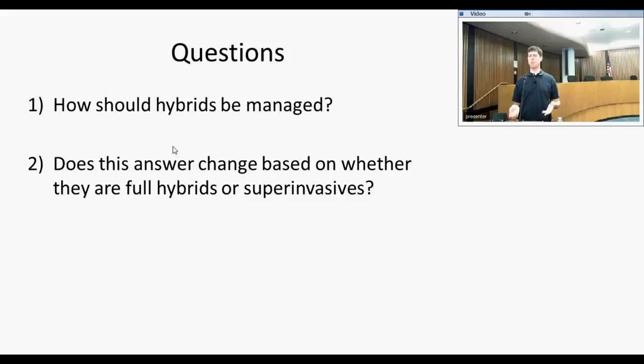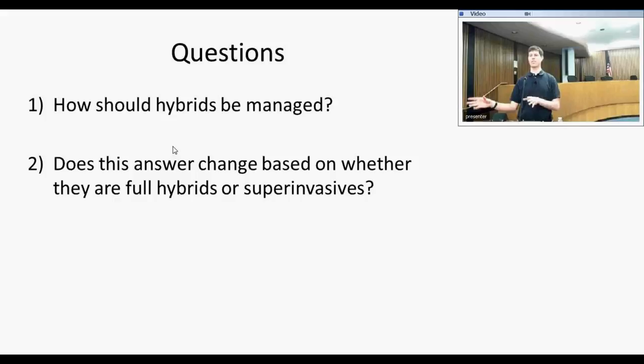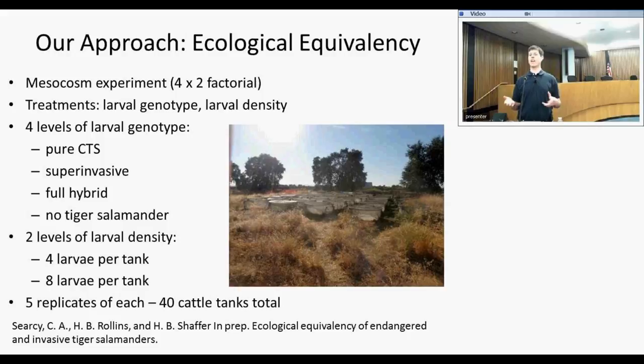The questions are: how should hybrids be managed? Are they basically filling the same ecological role as pure California tiger salamanders? Does the answer change depending on whether we're looking at full hybrids with a large fraction of the 68 markers from the Texas salamander, versus ones that only have three of those markers? We decided to look at this in terms of ecological equivalency — if they're having the same impact on the rest of the vernal pool community, they're a pretty good substitute; if not, we need to be worried about them. We addressed this using a mesocosm experiment.